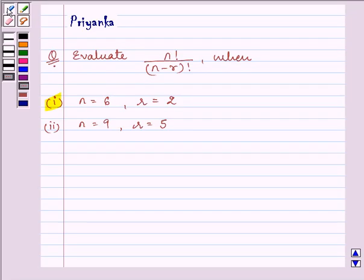the value of n is given to us as 6 and r is given to us as 2, and in the second part, the value of n is given to us as 9 and r is given to us as 5.